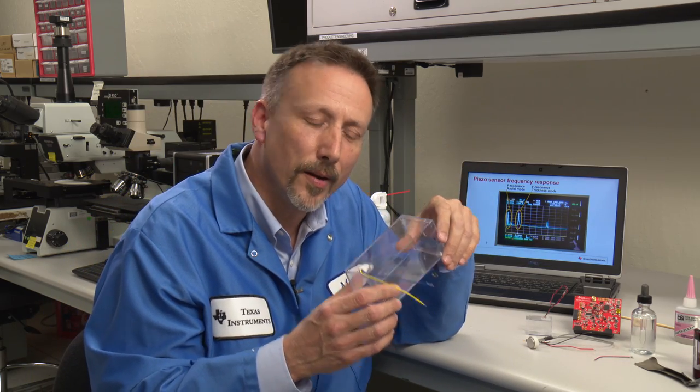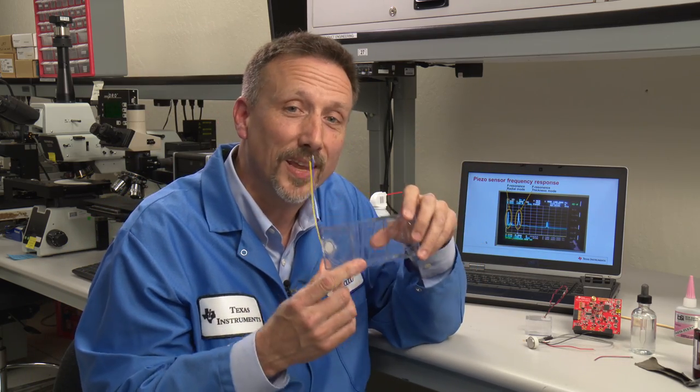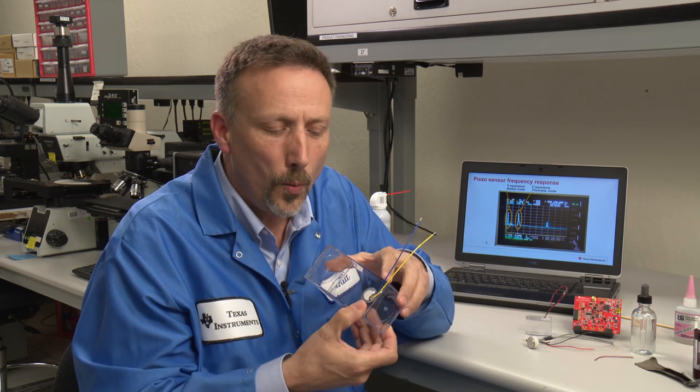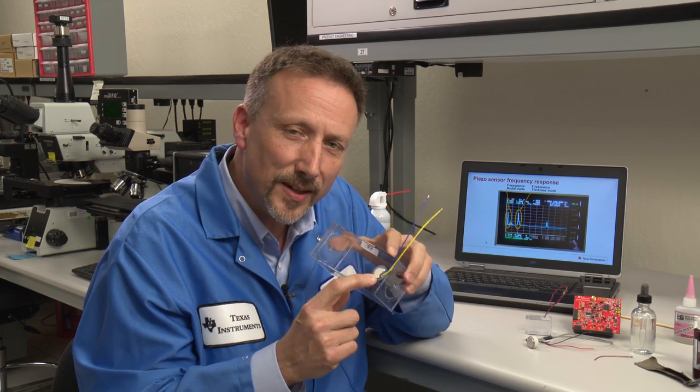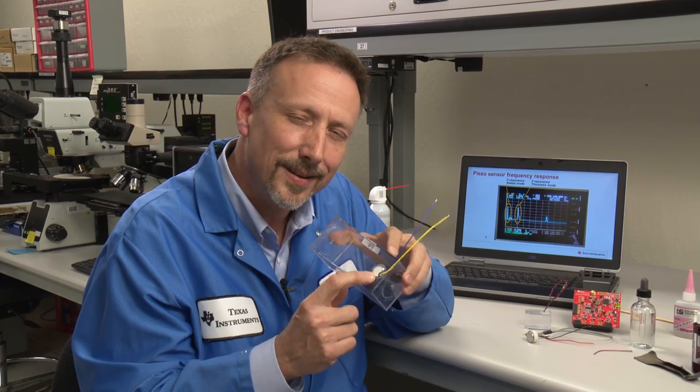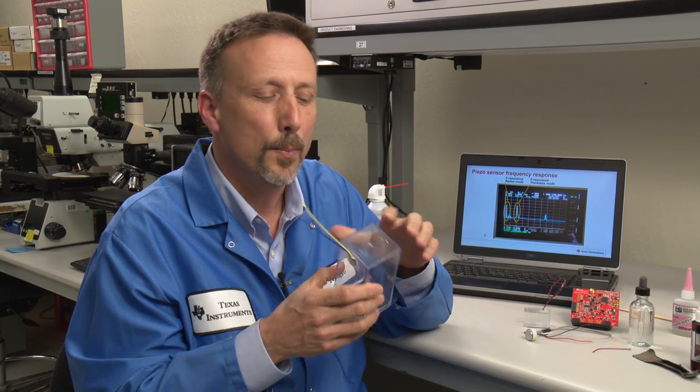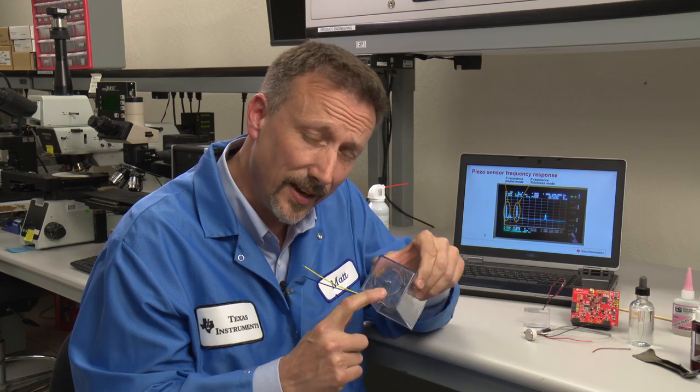So far, we've talked about how to put together a fluid identification system. We can turn this fluid identification application instead into a level application by merely putting the transducer on the bottom of the container.